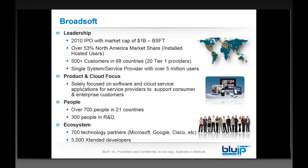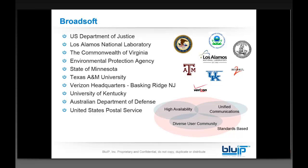Broadsoft as a firm does have customers that they service directly. Some customers they do business with are the U.S. Department of Justice, Los Alamos National Laboratory, State of Minnesota, Texas A&M, Verizon, University of Kentucky, and the U.S. Postal Service. They're a very large company that goes after very large opportunities — companies with thousands of employees who need a cloud-based phone system. Broadsoft also offers their soft switch product to carriers like Blue IP.